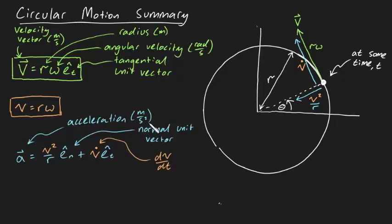Another equally valid way of expressing the acceleration vector is a equals omega squared r times en plus alpha r times et, where alpha is the angular acceleration of the particle in radians per second squared.